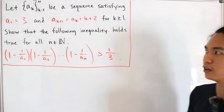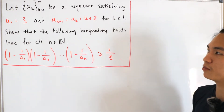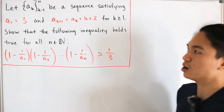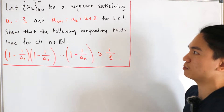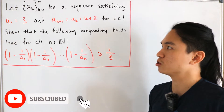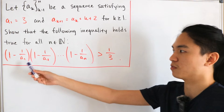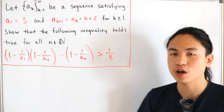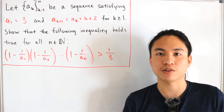So we'll go back to another video. Here's a little proof we like to verify, and this is in terms of dealing with sequences. We let a sub k be a sequence satisfying the recurrence relation. We have that a sub 1 is equal to 3, and a sub k+1 is equal to a sub k plus k plus 2, for k greater than or equal to 1. We want to show that the product 1 minus 1 over a sub 1, times 1 minus 1 over a sub 2, all the way up to 1 minus 1 over a sub n, is strictly greater than 1 over 3.